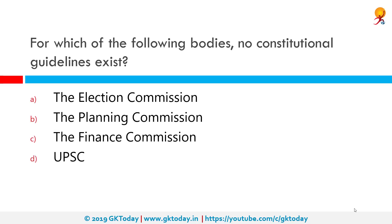For which of the following bodies do no constitutional guidelines exist? The correct answer is the Planning Commission. This is because the authority for creation of the Planning Commission was not derived from the Constitution of India or any statute. It was an arm of the central government of India, until Niti Aayog replaced it.